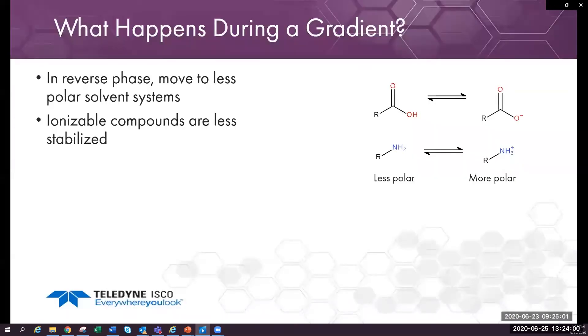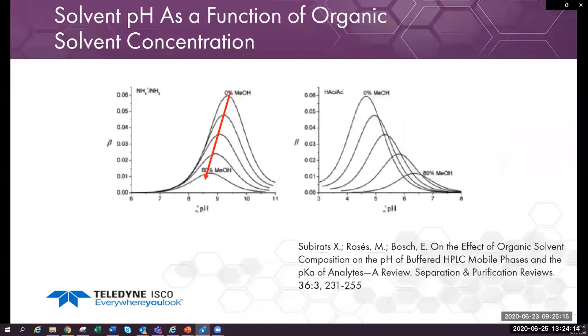So what happens during the gradient? Compounds are going to ionize less when we go to less polar solvents. The equilibration shifts from less polar forms and they retain on the compound better. With a given concentration of ammonia, the pH decreases in the solvent system. It becomes less polar as in a gradient.